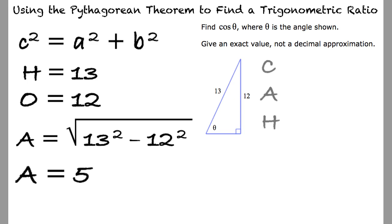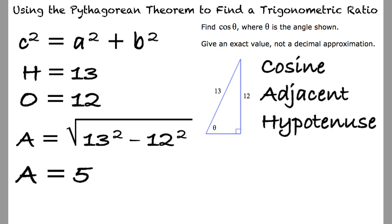Since the cosine is the adjacent over the hypotenuse, the cosine of theta equals 5 thirteenths.